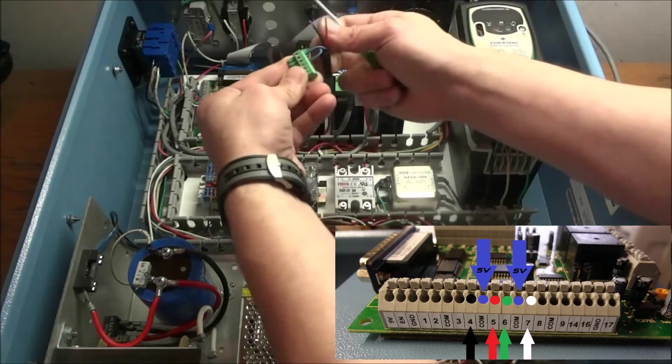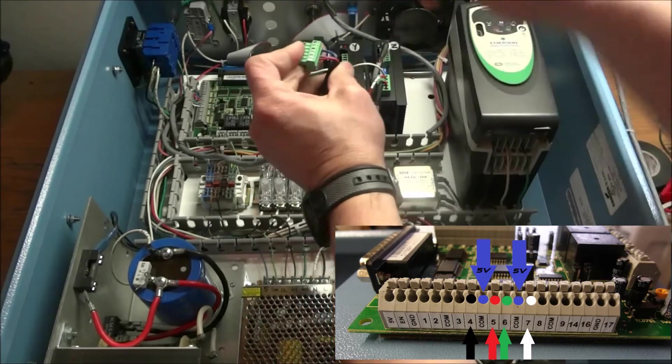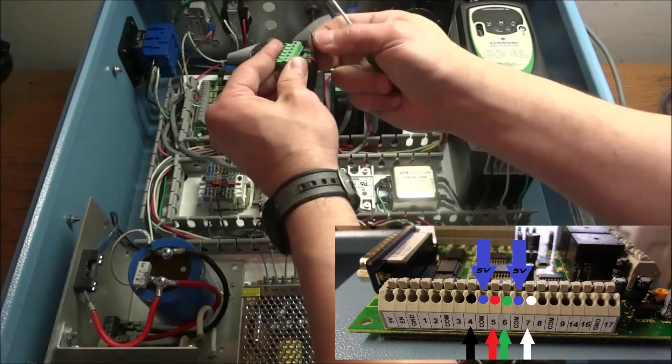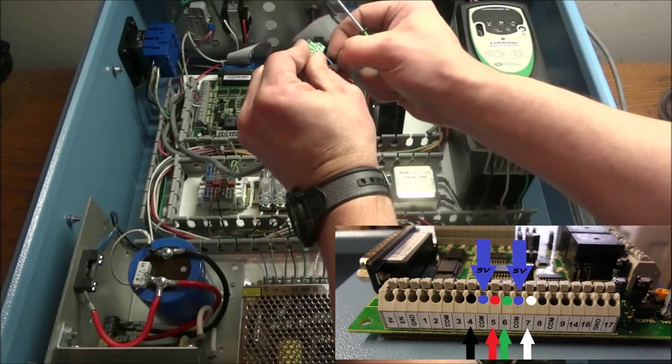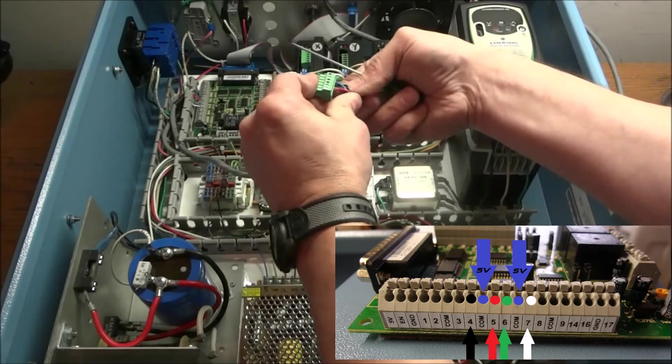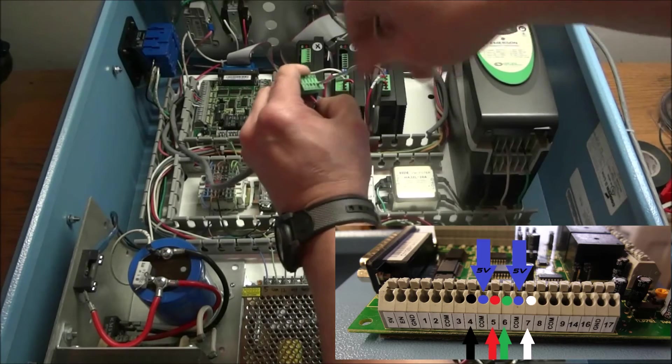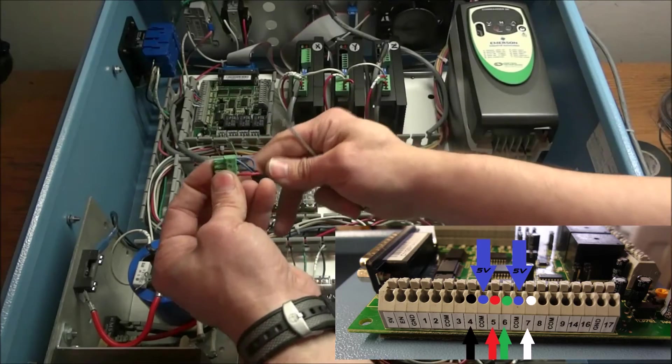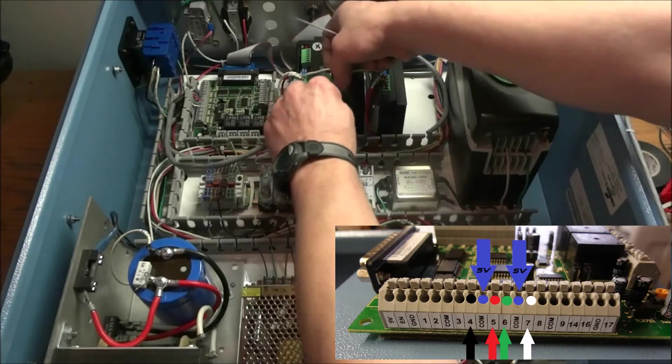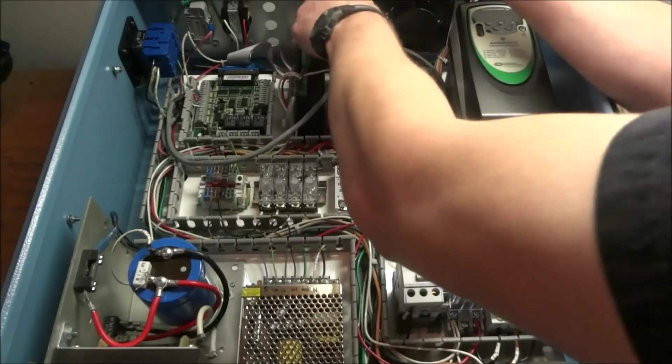And then we used our red for our direction. And our black was used for our pulse or step. And that is going into the second pin here. Get a shot of that. Okay. That takes care of Y.